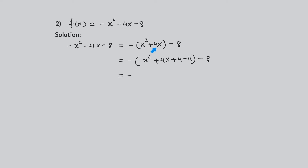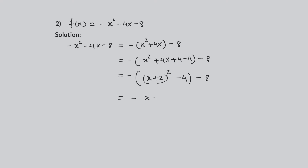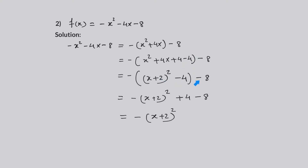To complete the square for the terms in the parentheses, we take half the coefficient of x, which is 2, square it, then add and subtract. Regrouping the first three terms in the parentheses as a perfect square trinomial, we have x squared plus 4x plus 4, which equals x plus 2 squared, minus 4, minus 8.